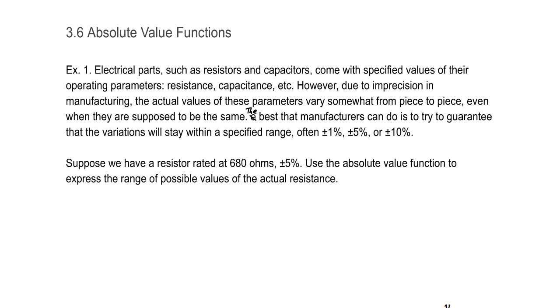However, due to imprecision in manufacturing, the actual values of these parameters vary somewhat from piece to piece, even when they're supposed to be exactly the same. The best that manufacturers can do is to try to guarantee the variations will stay within a specified range—1%, 5%, 10%, something in that regard.